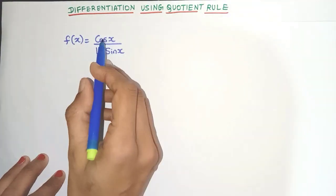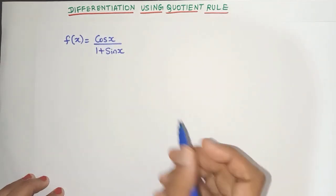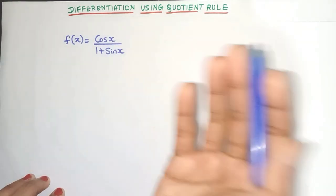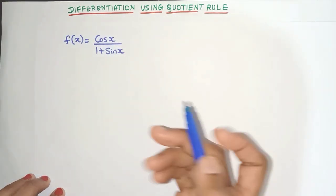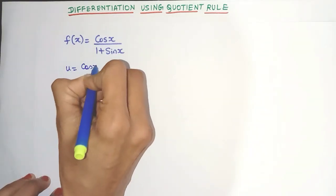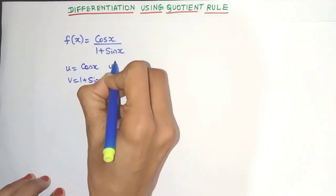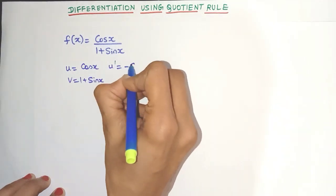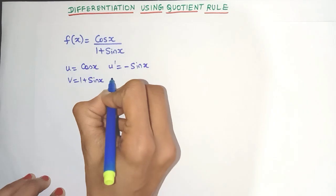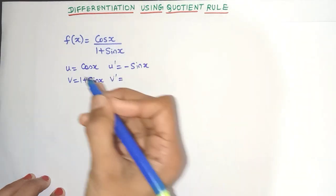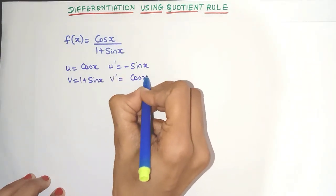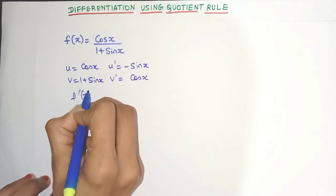Now in our last example we have trigonometric expressions. Again numerator denominator. So what do we do? Yes. We use quotient rule. So let's write u as cos x and v as 1 plus sin x. Let's find the derivatives. Derivative of cos is minus sin and derivative of 1 is 0. Derivative of sin is yes cos x. So let's write the quotient rule.